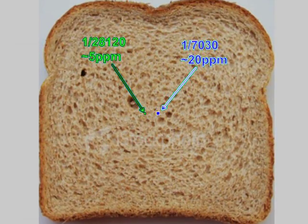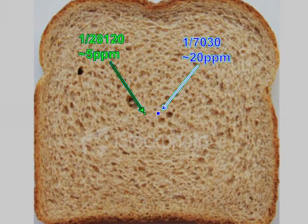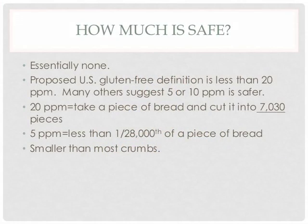We talk about the need to be strictly gluten-free. And the amount of gluten that can hurt you may actually really surprise you. It's a teeny, tiny, itty-bitty amount. To give you an example, we have a picture of a slice of bread divided into 7,030 pieces. And one 7,030th of that piece of bread is actually equal to 20 parts per million of gluten. It's a teeny, tiny crumb.